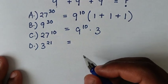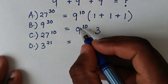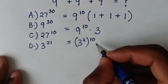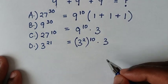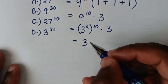From here, we make 9 to base 3. So 9 is the same as 3^2, then bracket this power of 10, times this 3. It will be equal to 3^(2×10), which is 3^20, times this 3.